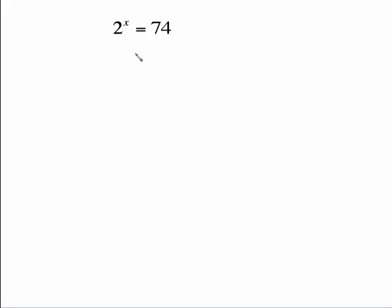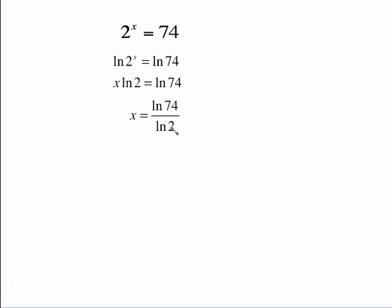Let's look at another one. Same idea. 2 to the x equals 74. To solve this, we're going to take the ln of both sides. ln 2 to the x. This x exponent gets to come down in front and become a coefficient. Now that says x times ln of 2 equals ln of 74. To undo that multiplication, all we have to do is divide by ln of 2. That is our exact answer. Use your calculator to get an approximation, and it's approximately 6.21.